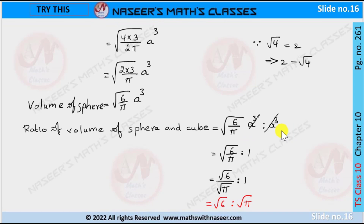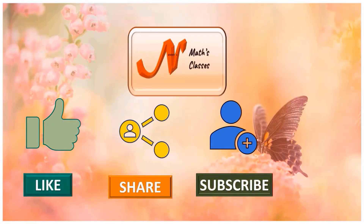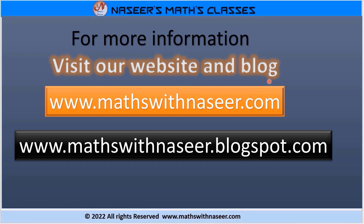Cancelling a³ from both sides, the ratio of the volume of the sphere to the volume of the cube is √(6/π) : 1, which can be written as √6 : √π. Therefore √6 : √π is the ratio of their volumes. Please like, share, and subscribe to our channel. Visit www.mathswithnaseer.com for more information. Thank you.